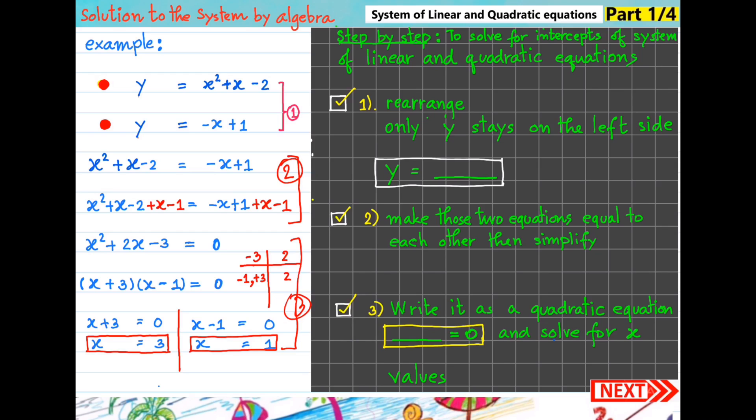Solution to the system by algebra method. Step by step to solve for intercept or solution of the system of linear and quadratic equation. First one: rearrange it. Second one: make those two equations equal to each other, then simplify. Third one: write it as a quadratic equation.